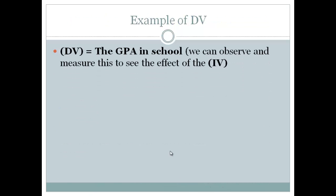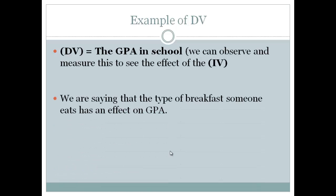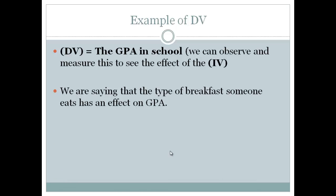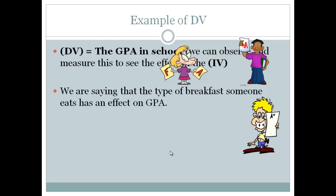An example of a DV in our previous example might be GPA in school. We can observe and measure this and see if it changes because of the independent variable. So we're saying that a type of breakfast someone eats has an impact on their GPA. So if they eat a nutritious breakfast, maybe they're going to get better grades.